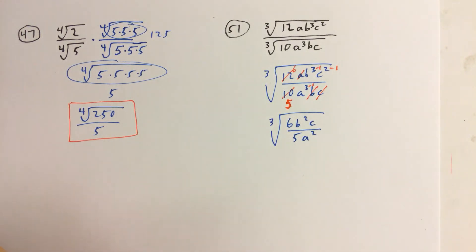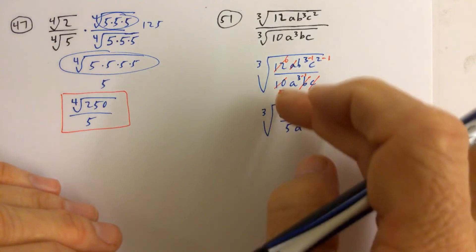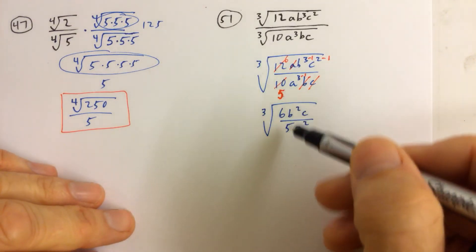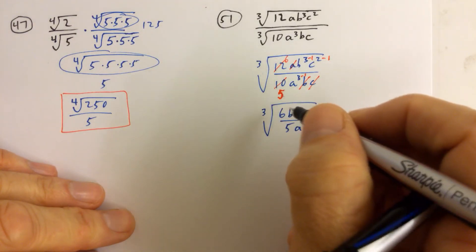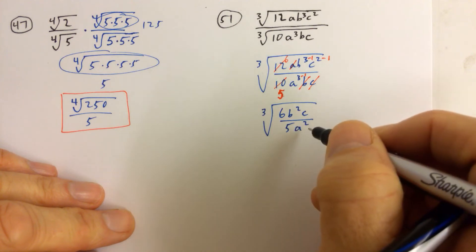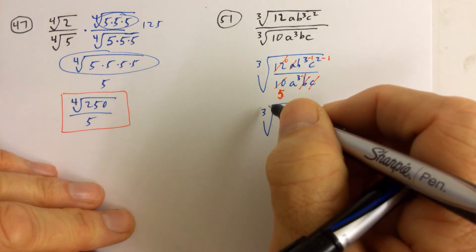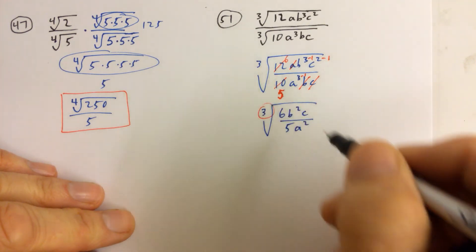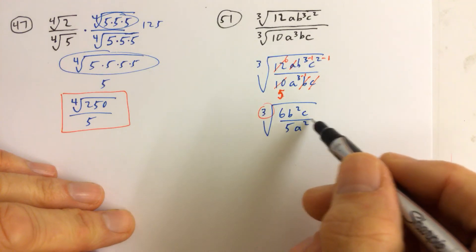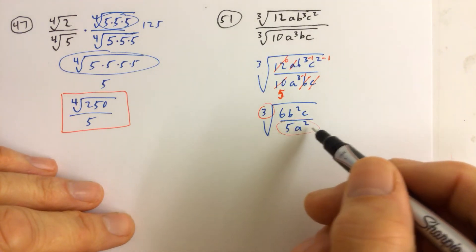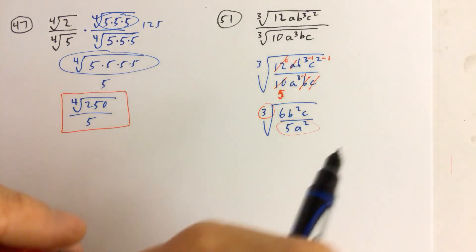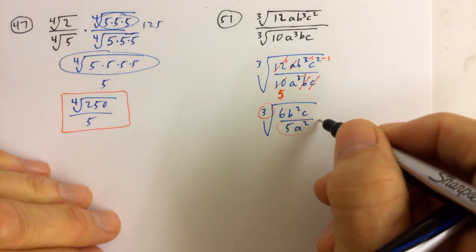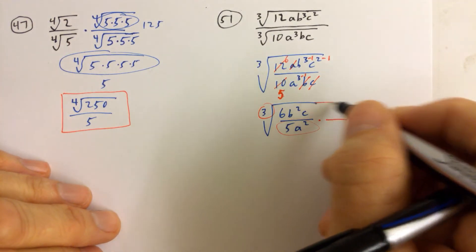Now, if we want to, we don't have to split up this fraction again. What we could do is we could just rationalize the denominator inside by noticing that we need groups of 3. So we have to have a group of 3 of each of the factors downstairs. And so what we could do here is we could multiply top and bottom of this fraction all under the radical by,